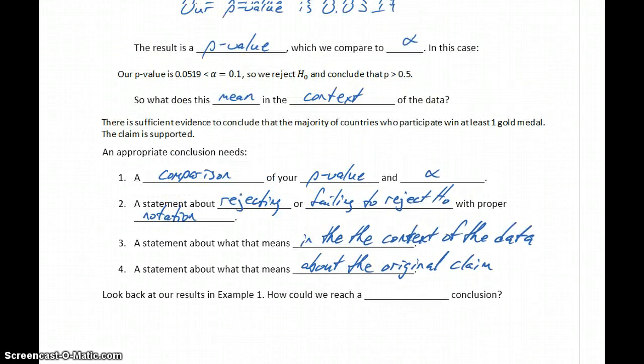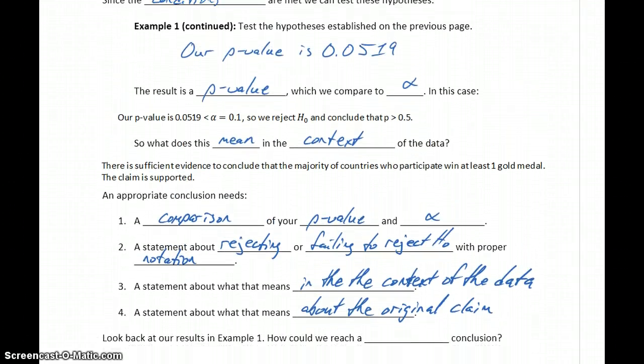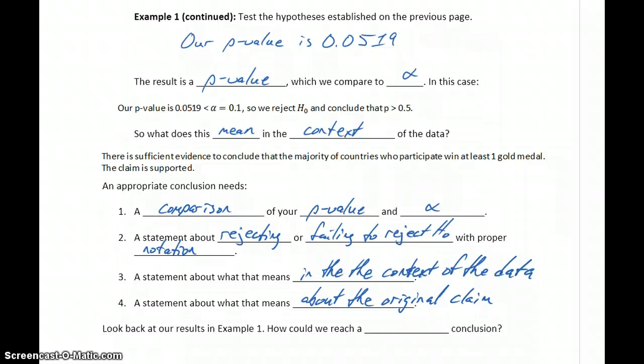So the purpose of those last two statements are to make your conclusions very accessible to anyone. So that someone could basically skip to the end of your analysis and say, oh, what you're concluding is that the majority of countries who participate win at least one gold medal. For example, the original claim was supported.